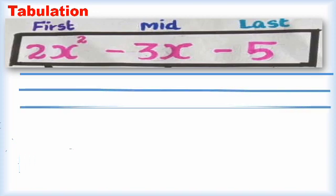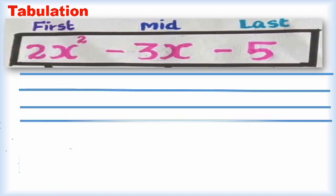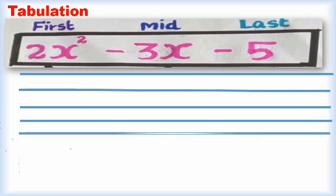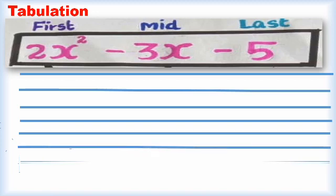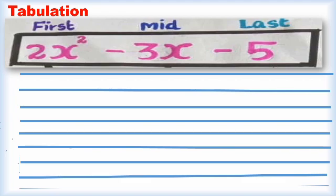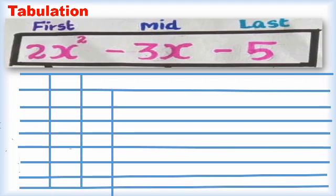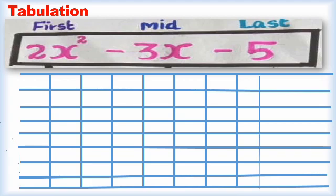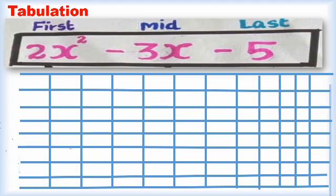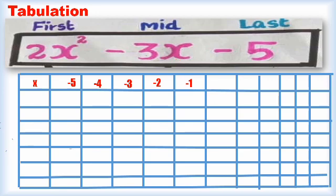First, we have 2x². That means we multiply x two times and then multiply by 2. First we have to find the square value of x. The x values are: minus 5, minus 4, minus 3, minus 2, minus 1, 0, 1, 2, 3, 4, 5.